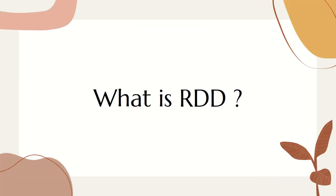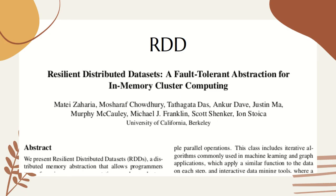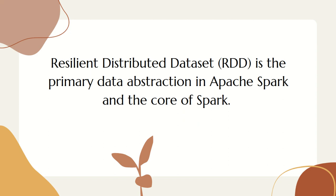So what is RDD? It's one of the frequently asked questions when we start working with Apache Spark. The very first thing that we encounter is RDD. RDD got its name from a research paper which I'm currently showing you. It got published about one decade back by Amzaharia and his team. They named RDD as Resilient Distributed Datasets. RDD is just an abbreviation — its full form is Resilient Distributed Datasets. RDD is a primary data abstraction, or we also say it's a fundamental data structure of Apache Spark.